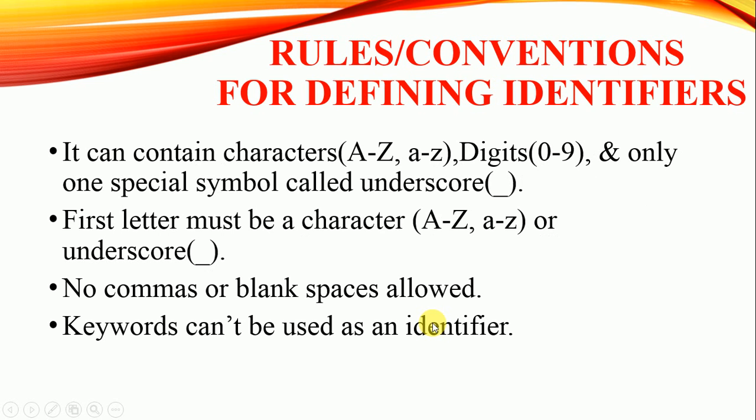There are some specific rules and conventions for defining an identifier. The first rule is that an identifier can contain only three things: characters (capital A to Z, small a to z), digits (0 to 9), and only one special symbol called underscore. The second rule: the first character of an identifier must be non-digit, meaning the first character could be an alphabet or underscore, but it can't be a digit.